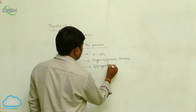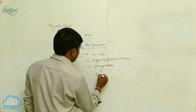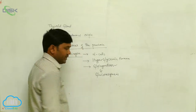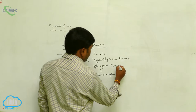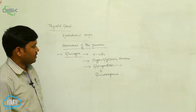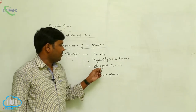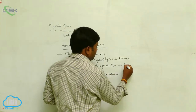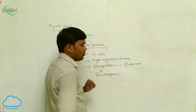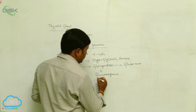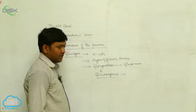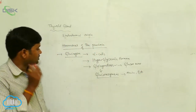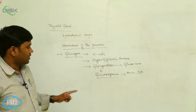Glucagon stimulates glycogenolysis as well as gluconeogenesis. Glycogenolysis means the formation of glucose-1-phosphate by the splitting of glucose monomers. Gluconeogenesis means obtaining glucose from amino acids and fatty acids — that is, obtaining glucose molecules from amino acids and fats.